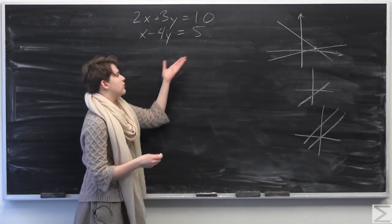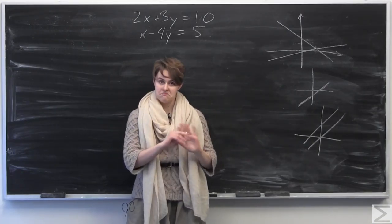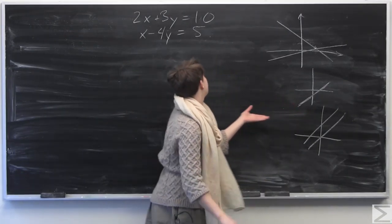Which would happen if you get something like 0 equals 1 or something like that, and you're like, OK, yep, no solutions. So that's what we're trying to identify here.